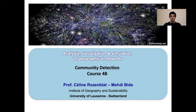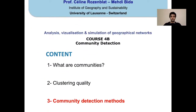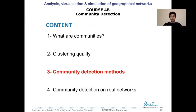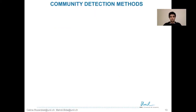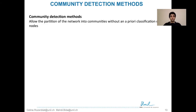We continue with the second part of this course about community detection in networks. In this part we will see several methods that will allow us to detect communities in networks. Community detection methods are methods that will allow us to partition the networks into communities without an a priori classification of the nodes.